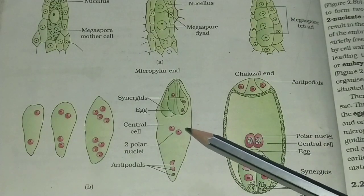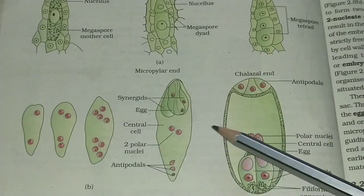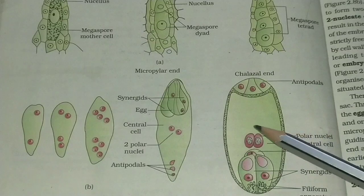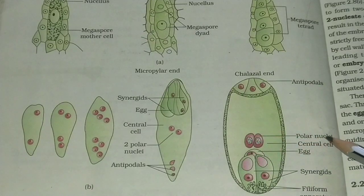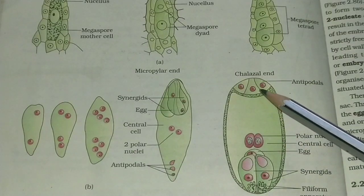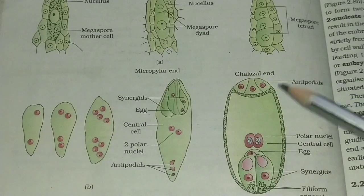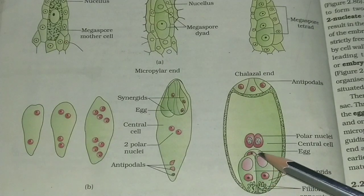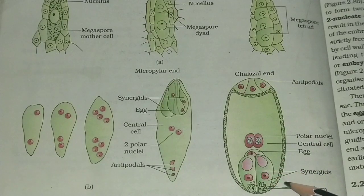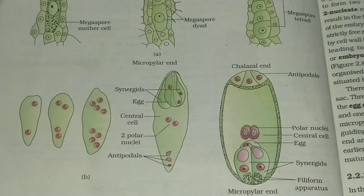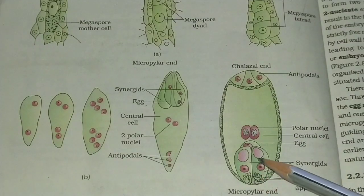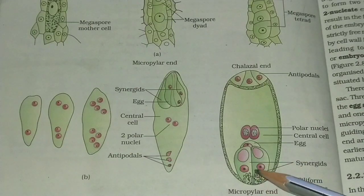This immature embryo sac now becomes mature. The two polar nuclei fuse together to form one cell — a diploid polar nuclei cell. The three antipodal cells on the chalazal end remain as they are. The two synergid cells are also present. Inside the synergid cells, a special structure is formed called the filiform apparatus. This filiform apparatus helps guide the pollen tube and provides a path for it.